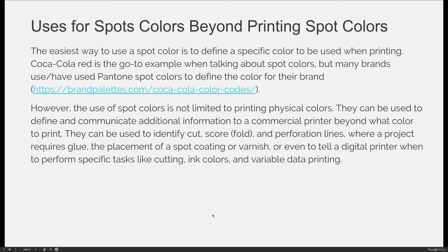When you set up a document, we do not have to use spot colors literally. We don't have to say I want a specific color of ink. The easiest way to use a spot color is to define a specific color to be used when printing. Coca-Cola Red is usually the go-to example when talking about spot colors, but many brands have used Pantone spot colors to define what the color for their brand is and how to be consistent about showing that color.